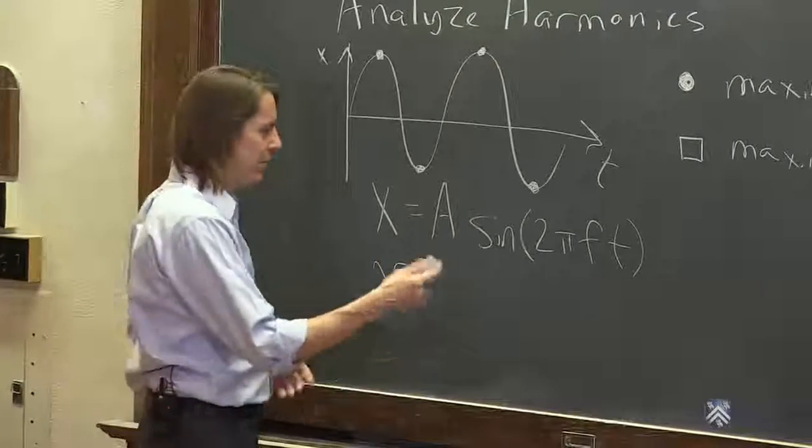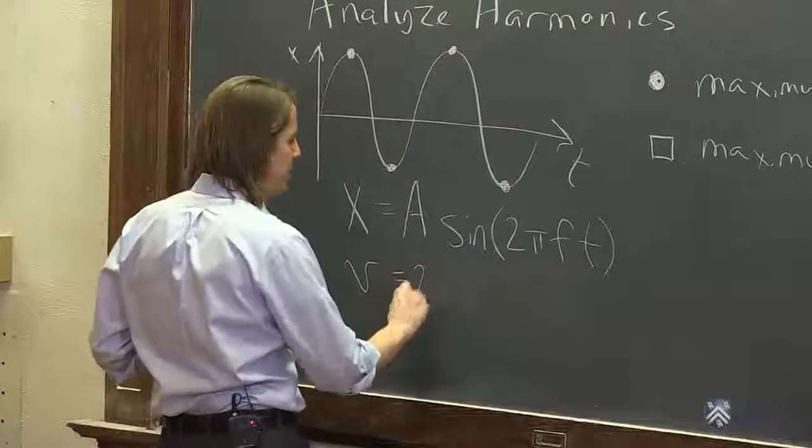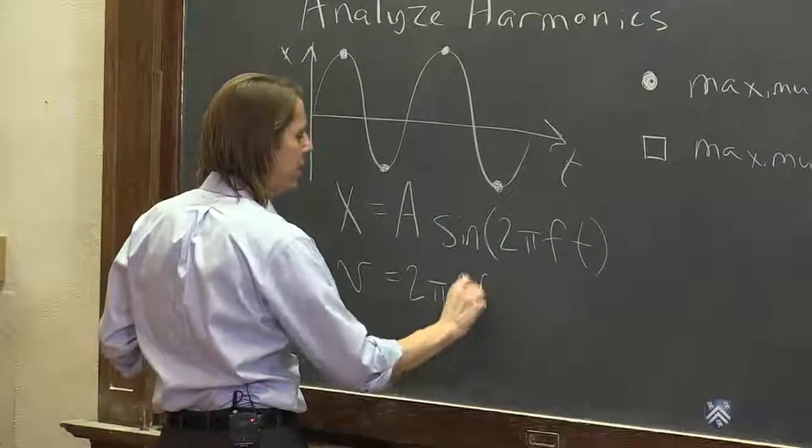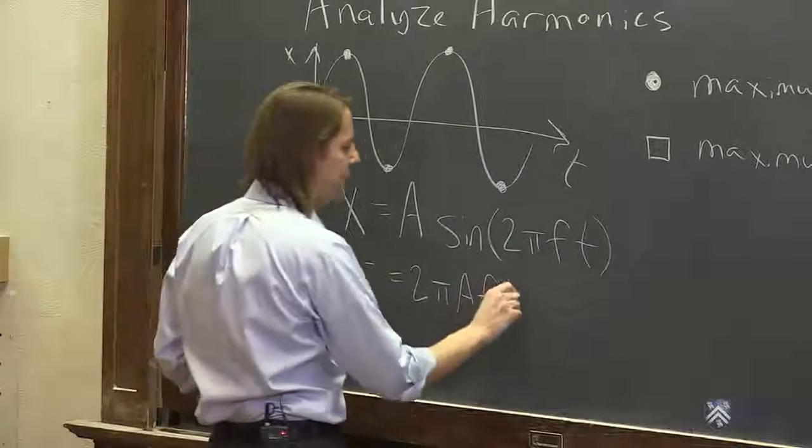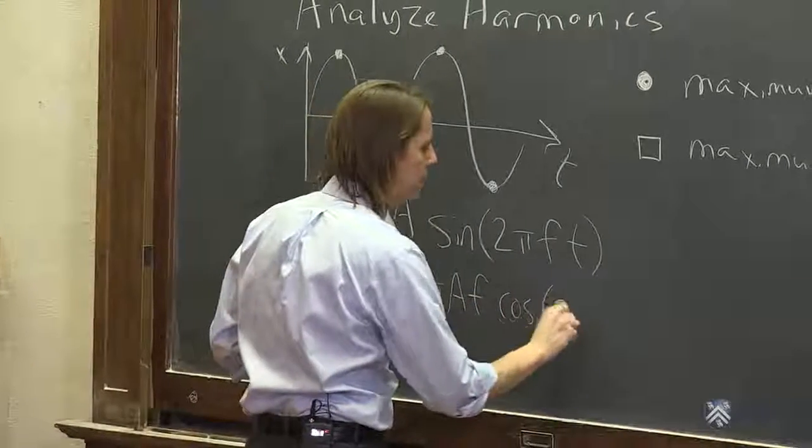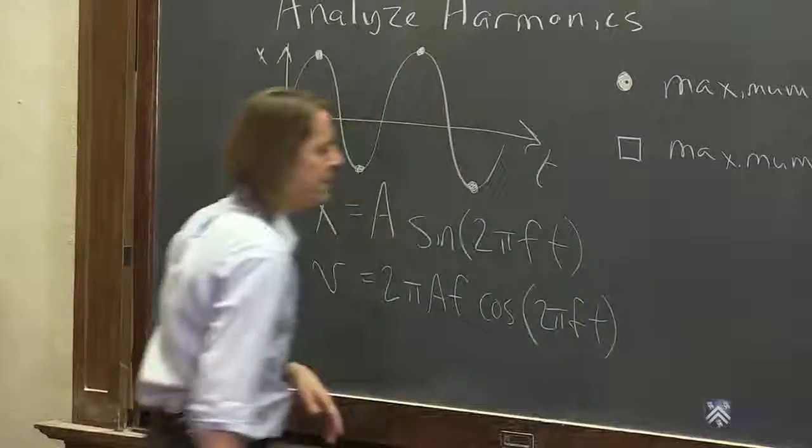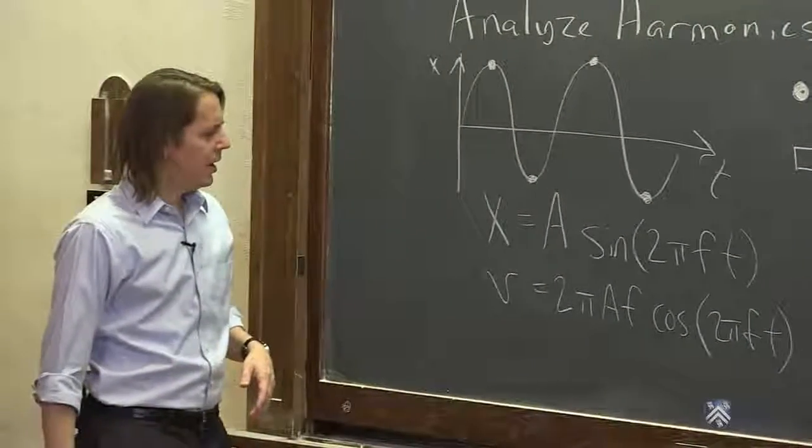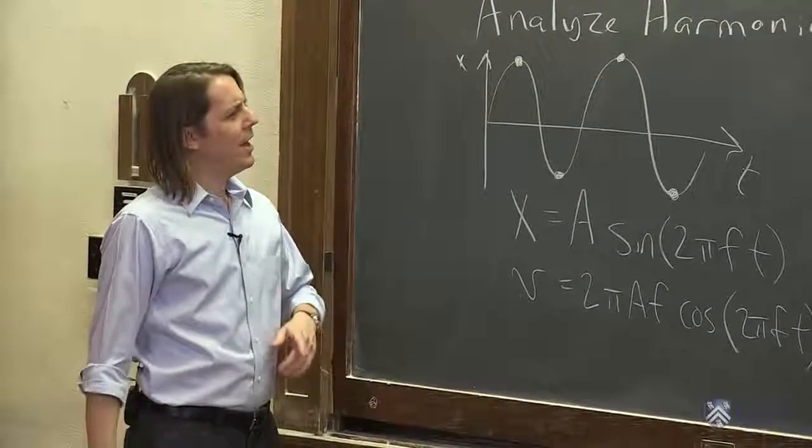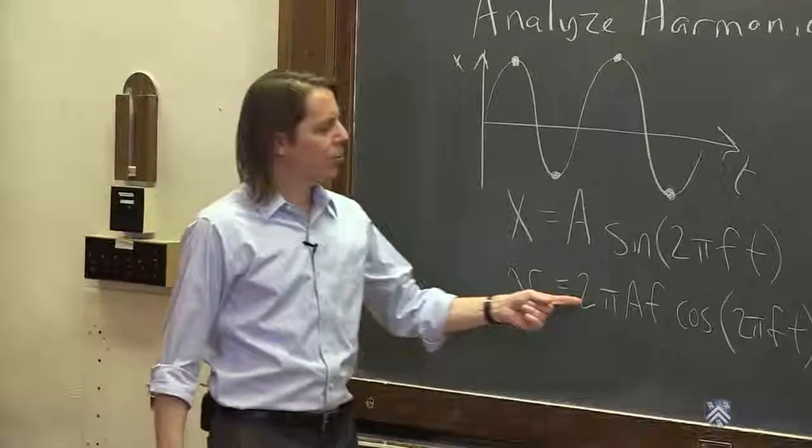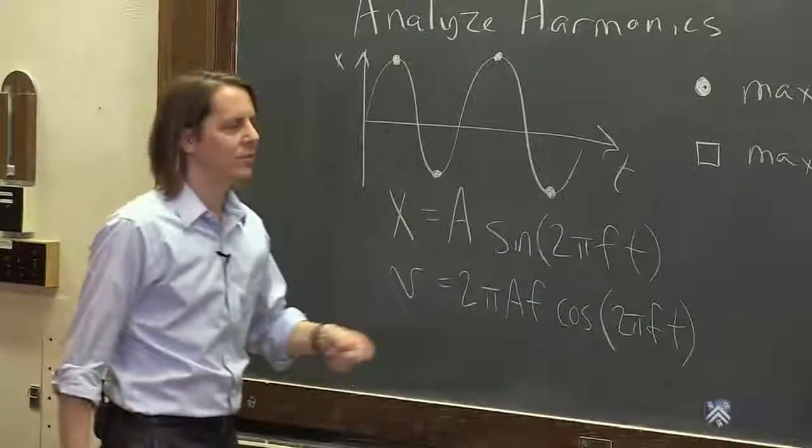You're really taking a derivative of this if you know how to do that. And that is v = 2πAf, and then the sine turns into cosine, and this part stays the same, 2πft. So if you were to ask where's the maximum speed, that would occur wherever the cosine function is at its maximum.